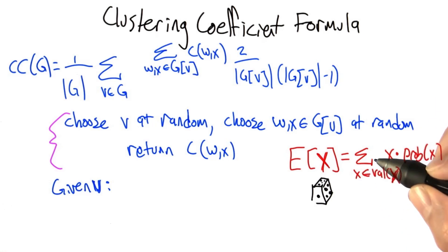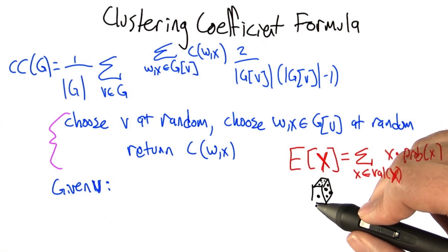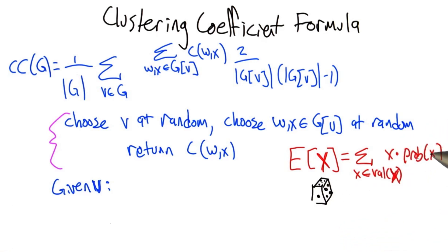Just to review, the expected value of some random variable x is the sum over all values that variable can take on, the value of that variable times the probability. So for example, for a six-sided die, the expected value that we get by rolling the die, it's the sum over all sides, the probability of getting that side, which is a sixth, times the value on that side, which is the numbers 1, 2, 3, 4, 5, or 6. And from that we can actually get the average value that comes up on the die, or the expected value.